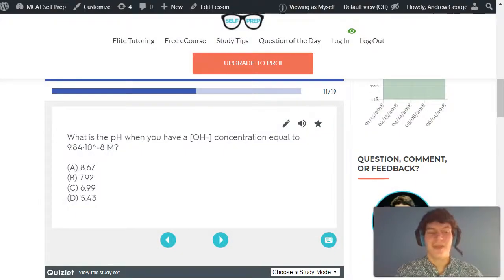Taking a second look at the answer choices, it looks like answer choice C was very close to our approximated answer. 6.99 is really close to 7.